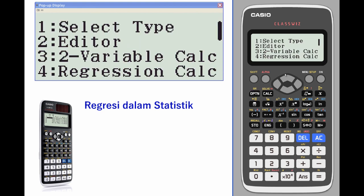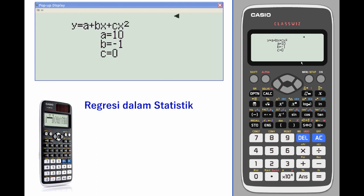We calculate the regression, and here's your regression for a quadratic. Notice there's no correlation coefficient. Correlation coefficients only with linear.